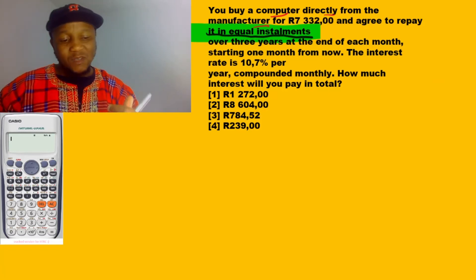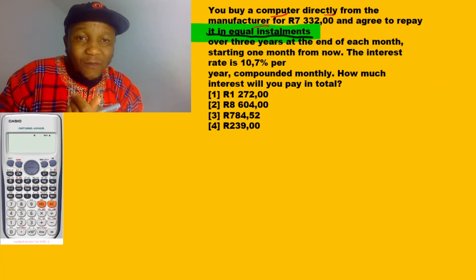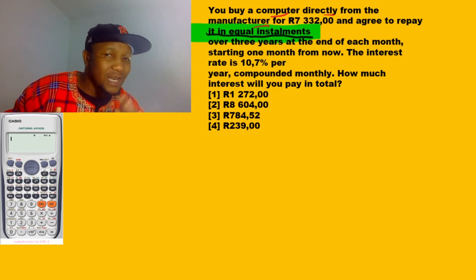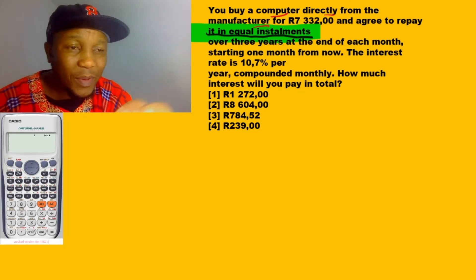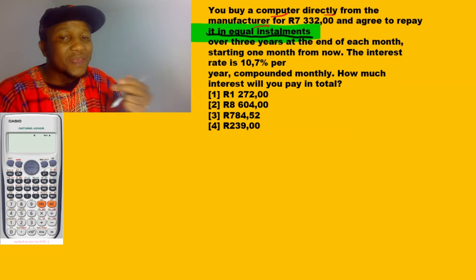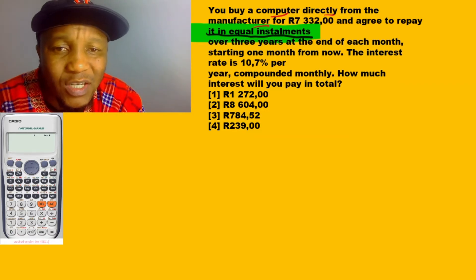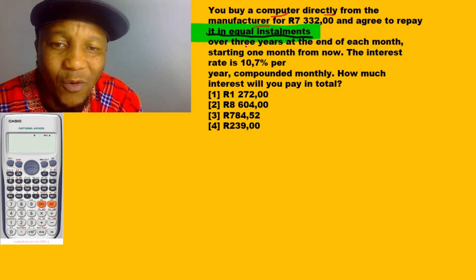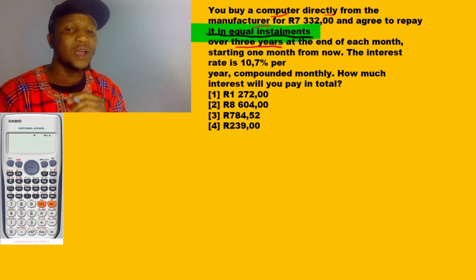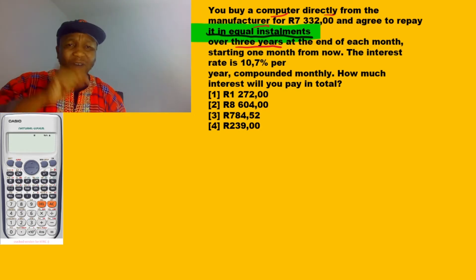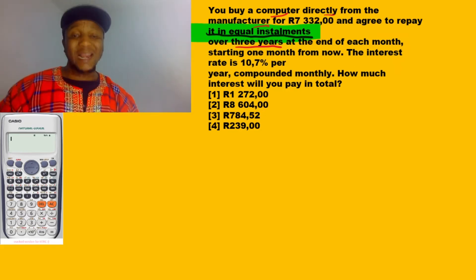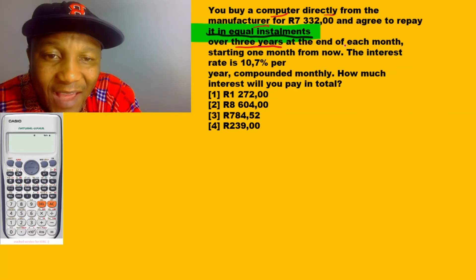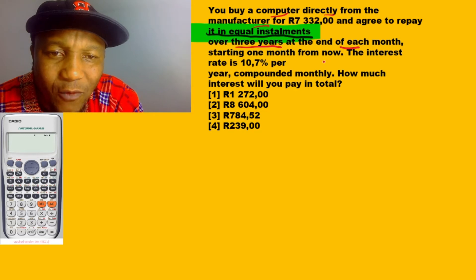It's going to be either a future value formula or a present value formula. Whenever they mention equal payments or equal withdrawals — something you do on a regular basis equally — and you agree to repay in equal installments for, say, three years or seven years — this could be a present or future value formula, but most likely it will be the present value formula.